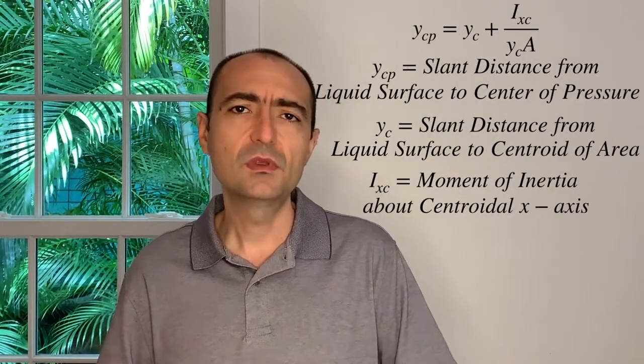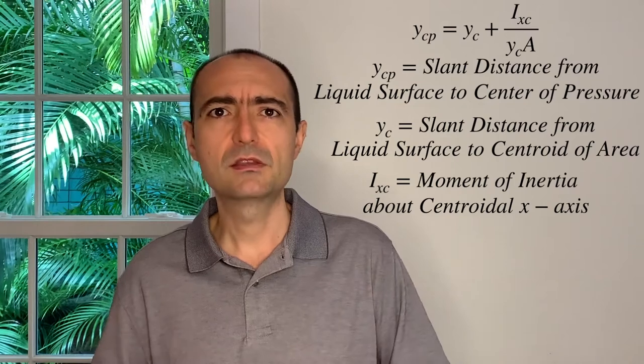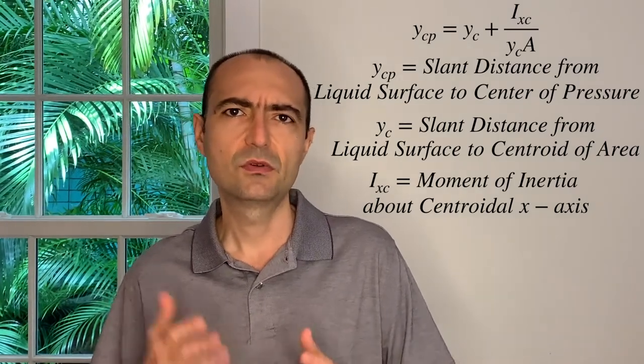An important follow-up question is where this force acts — the center of pressure. A useful hint: find the centroid of the shape first (which is easy), and the center of pressure will be slightly below that. For example, if the centroid is at 2.5 meters, the center of pressure might be at 2.6 meters, which can help eliminate answer choices. The formula involves I_xc, the moment of inertia about the centroidal x-axis.